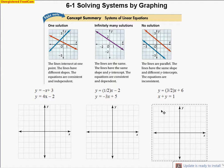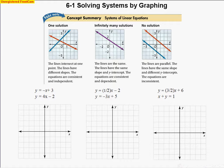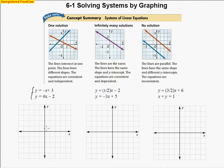This is the lesson for Chapter 6, Section 1, titled Solving Systems by Graphing. In this section, we're going to see two different equations, and they're going to ask us to graph them on the same coordinate plane. We'll see two systems with a brace around them, and that brace symbolizes that we're going to graph these two systems together on the same coordinate plane.